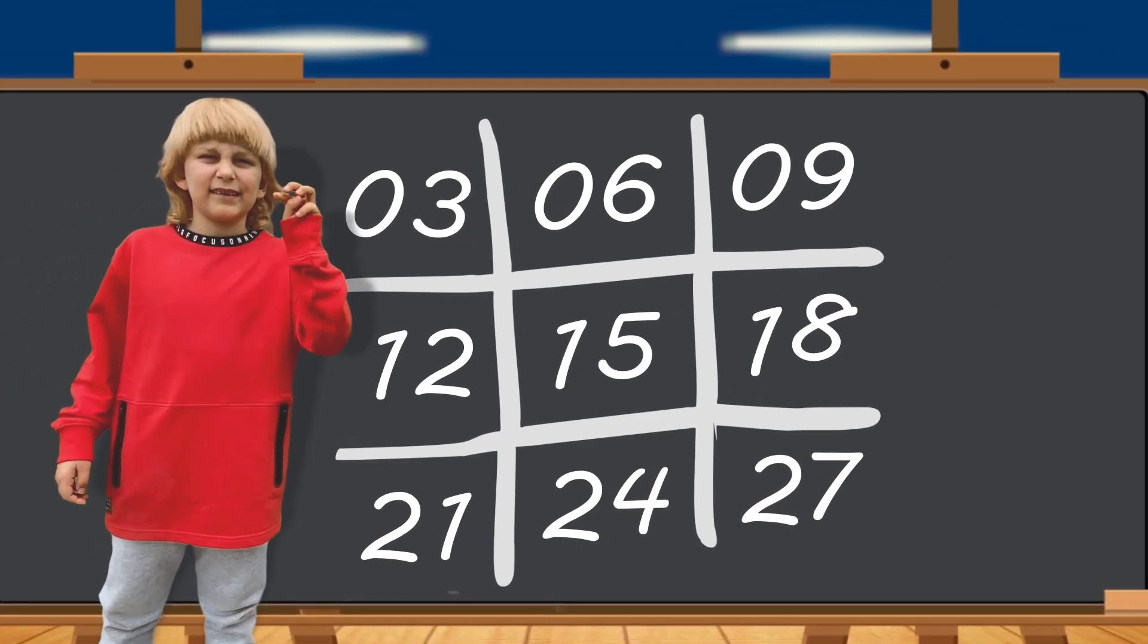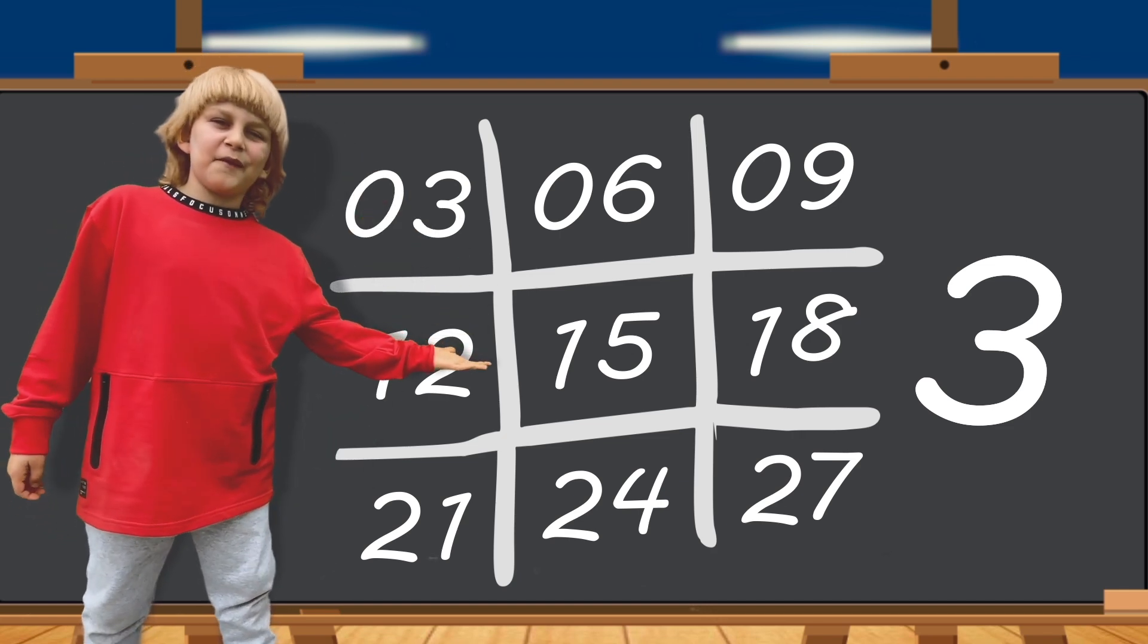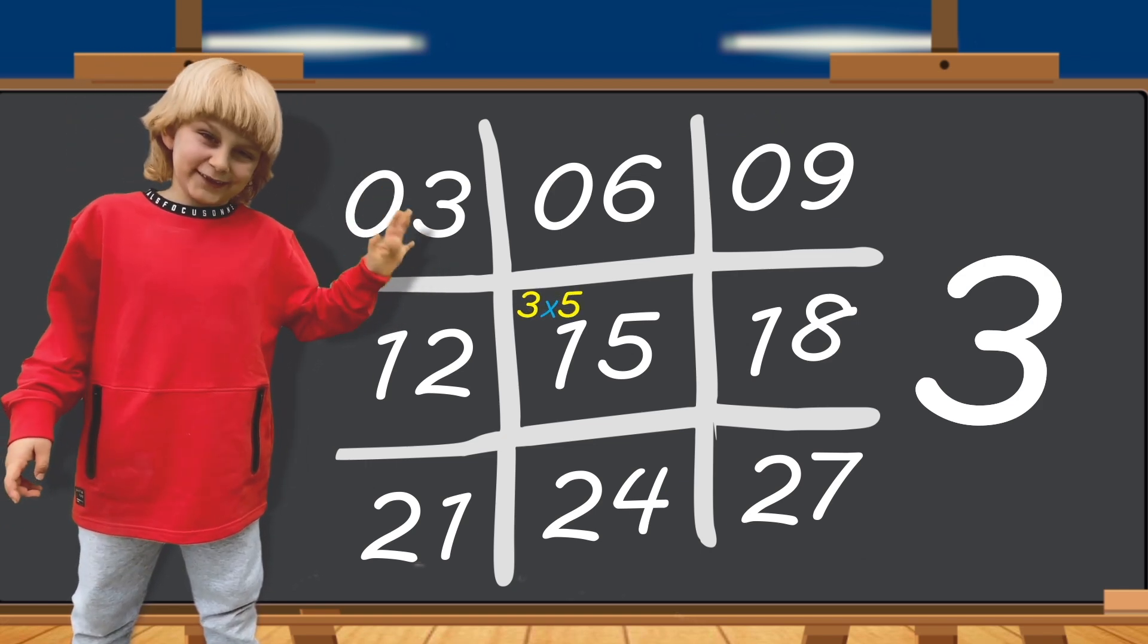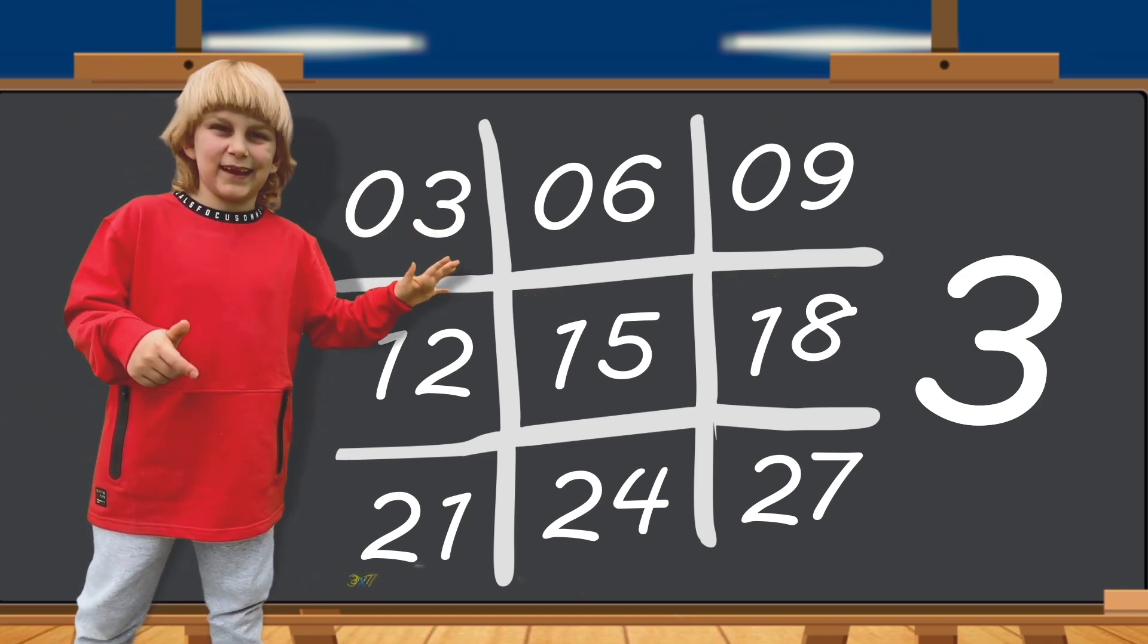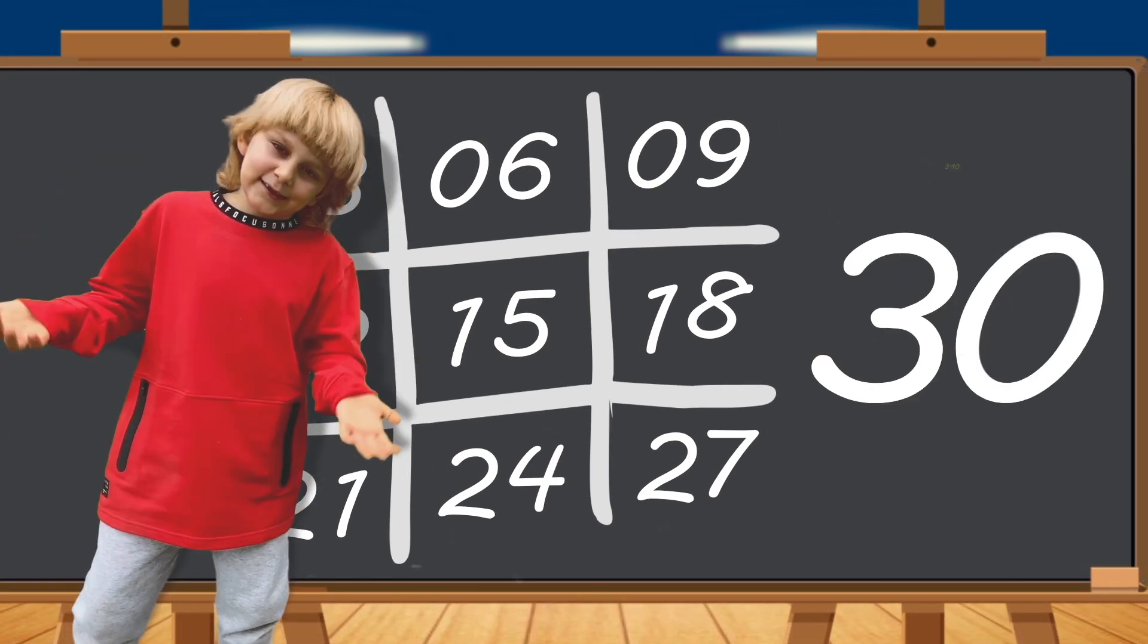And at the end, where you wrote a zero, you write a three, and now you have the times table of three, like you see behind me. Three times one, three times two, three times three, three times four, three times five, three times six, three times seven, three times eight, three times nine, and three times ten.